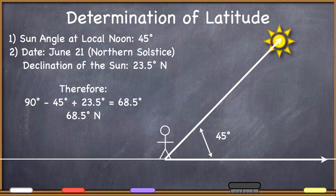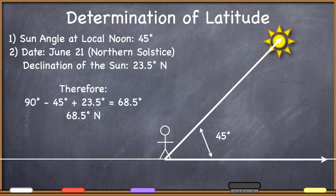What about this one? We went outside at local noon and found there was a 45-degree angle between the horizon and the Sun, measured with our protractor. Let's assume we're making this measurement on June 21st, the northern solstice. You also shouldn't need an analemma for this — the declination of the Sun on the northern solstice is 23.5 degrees north. Therefore: 90 degrees minus 45 degrees (the Sun angle at astronomical noon) plus 23.5 degrees (the Sun's declination) equals 68.5 degrees north.